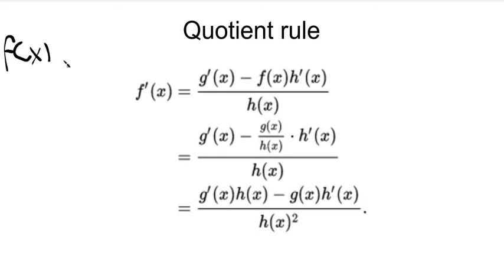So let's say f of x is equal to x squared divided by x minus 3. When you differentiate this, you don't just differentiate the top part and the bottom part.